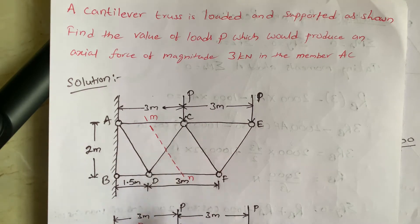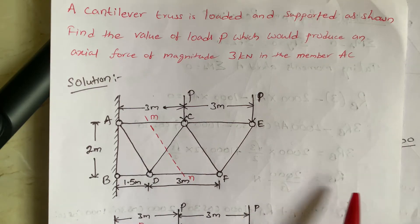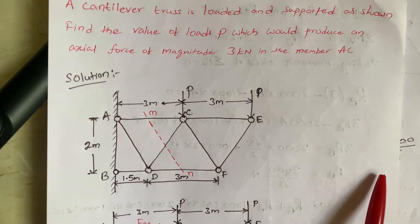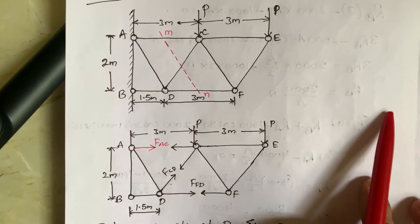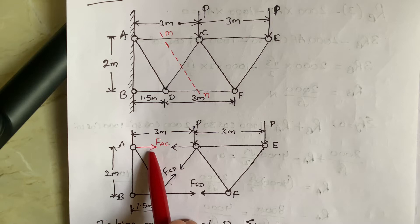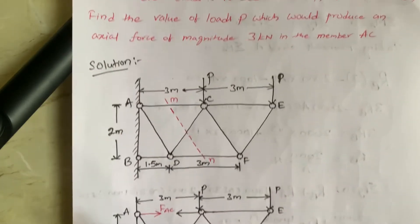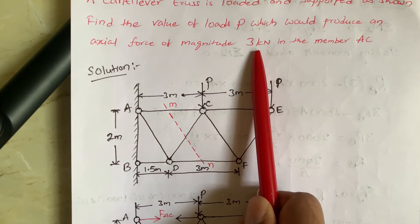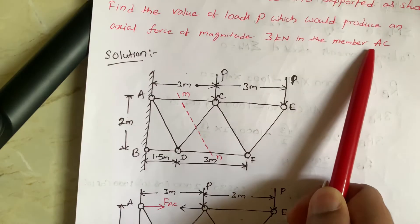So this is the truss. For this truss, first we have to draw the free body diagram. So here, this is the free body diagram and we have to find the force in the member AC and the force of magnitude which is given is 3 kN in the member AC.